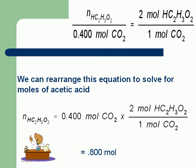We can see that the ratio of coefficients is essentially a conversion factor. In general, known moles of a reactant or product multiplied by a conversion factor gives the moles of another reactant or product, where the numerator of the conversion factor is the coefficient of the other reactant or product and the denominator is the coefficient of the known reactant or product.